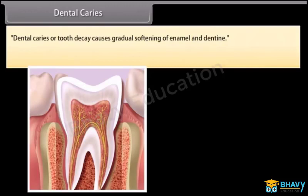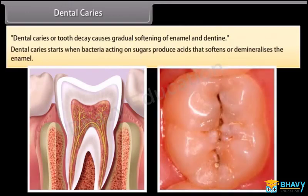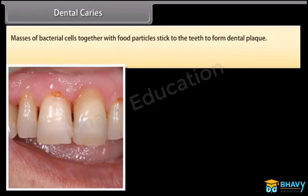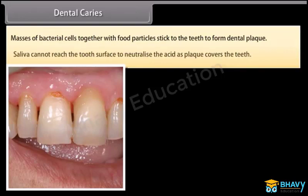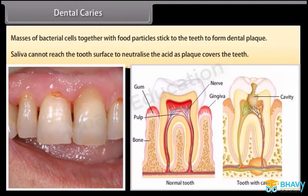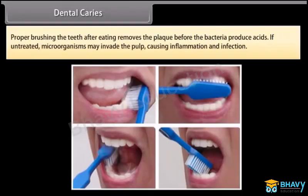Dental caries, or tooth decay, causes gradual softening of enamel and dentine. It starts when bacteria acting on sugars produce acids that soften and demineralize the enamel. Masses of bacterial cells together with food particles stick to the teeth to form dental plaque. Saliva cannot reach the tooth surface to neutralize the acid as plaque covers the teeth. Proper brushing of teeth after eating removes the plaque before the bacteria produce acids. If untreated, microorganisms may invade the pulp causing inflammation and infection.